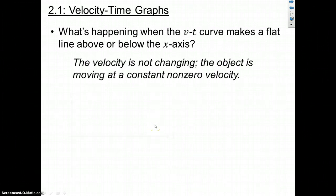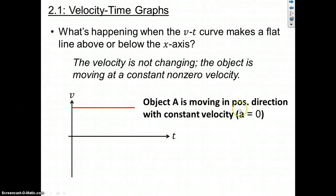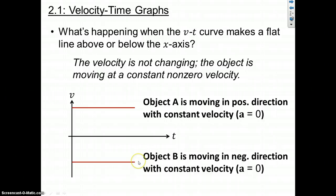What if we have a flat line above or below the x-axis? The y-coordinate of successive points doesn't change - when we move forward in time, we have the same y-value, the same velocity. So that's constant velocity with zero acceleration. Because we're in the top half, velocity is positive and we're moving forward. In the bottom portion of the VT curve, that's constant negative velocity - constant velocity in the negative direction - and acceleration is zero because delta-v is zero.